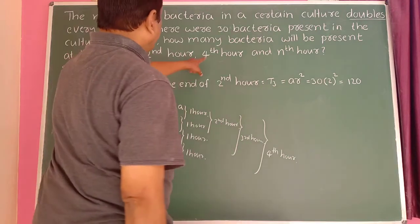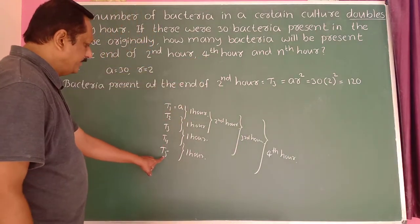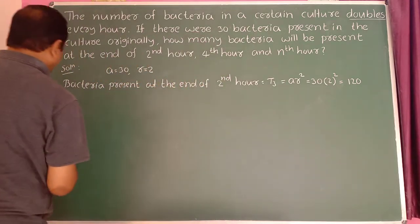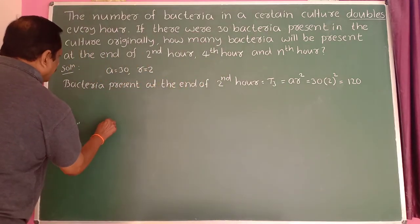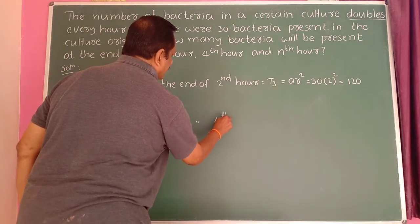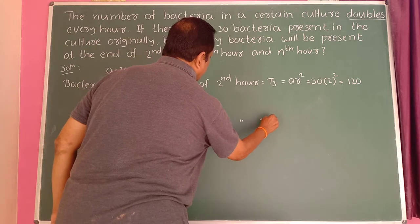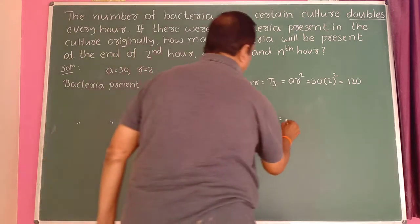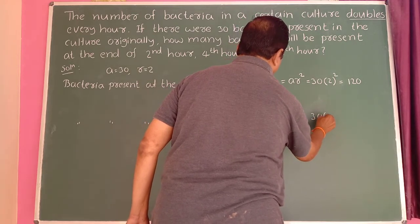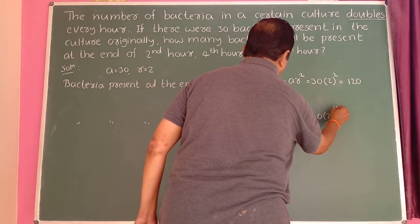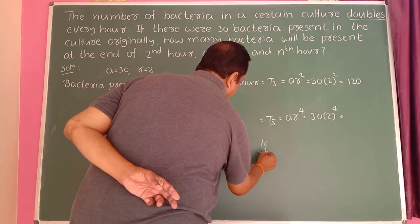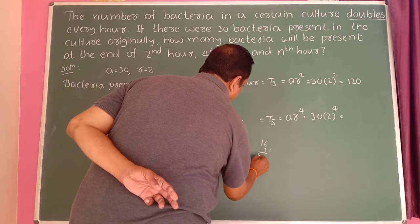Similarly, at the end of the 4th hour, 4th hour means T5. So bacteria present at the end of the 4th hour is equal to T5 = ar raised to 4. Therefore 30 × 2 raised to 4. 2 raised to 4 is 16, and 16 × 30 = 480.